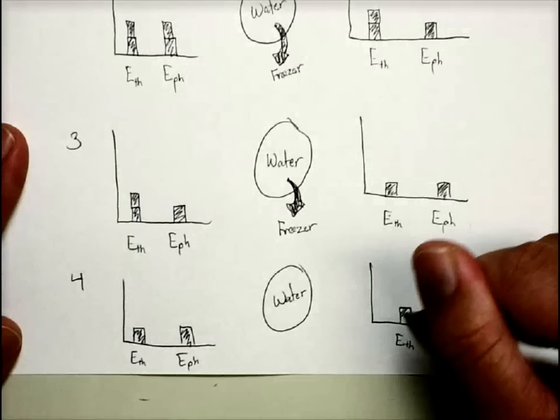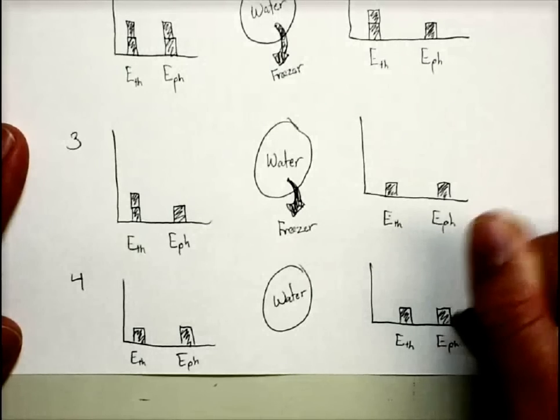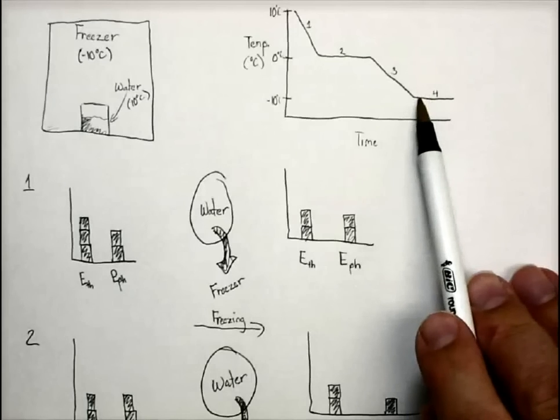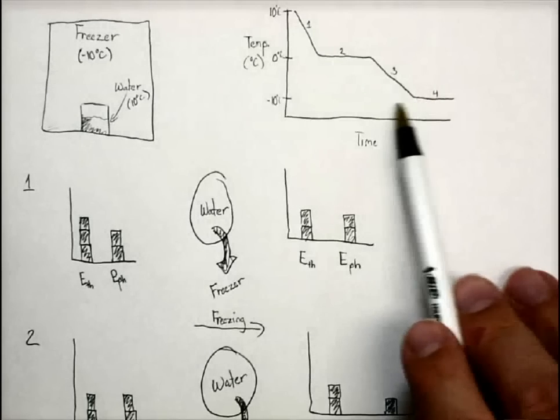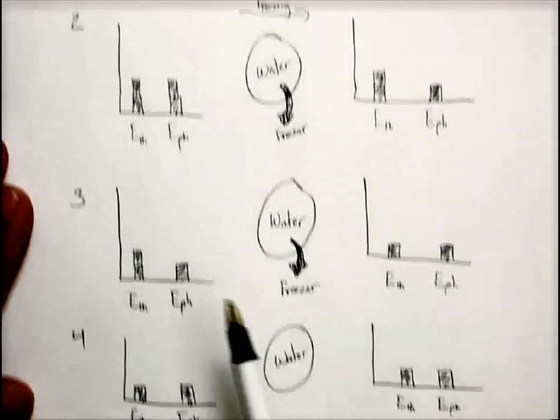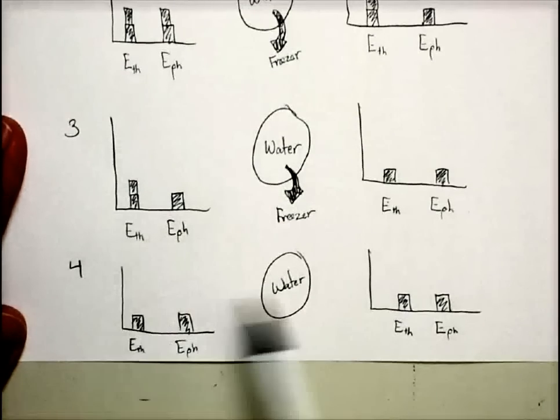And we're left with the same situation as before. Only now, an interesting thing has happened. Notice I went ahead and filled those in. At section 4, the temperature is not changing. That is, the ice has reached the same temperature as the freezer. So our thermal energy can't change. Thermal energy has to be one here. And it has to be one here.